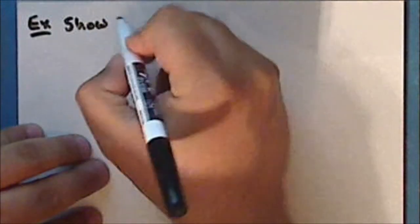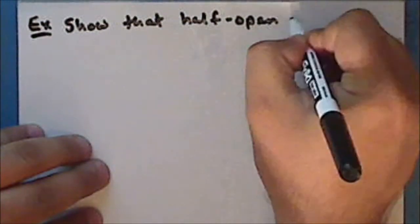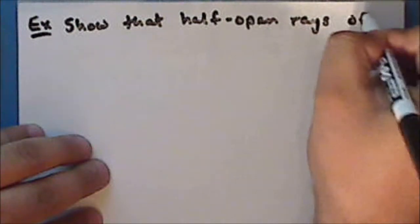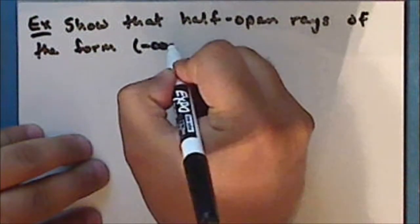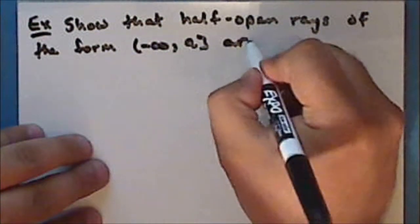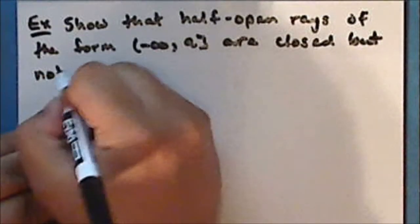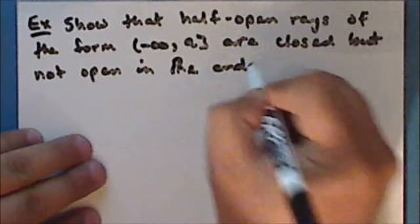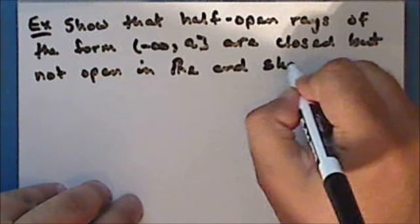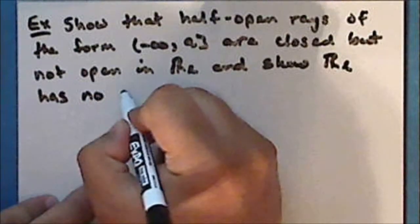As an exercise, show that half open rays of the form: the half open ray from negative infinity to A, are closed but not open in the Sorgenfrey line. And use this fact to show that the Sorgenfrey line has no isolated points.